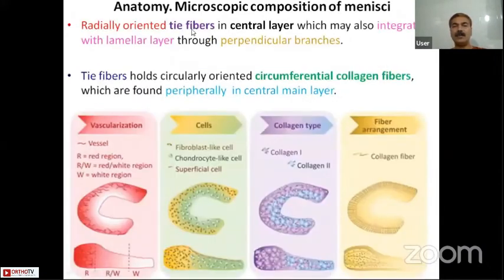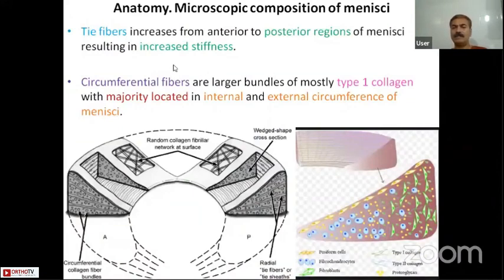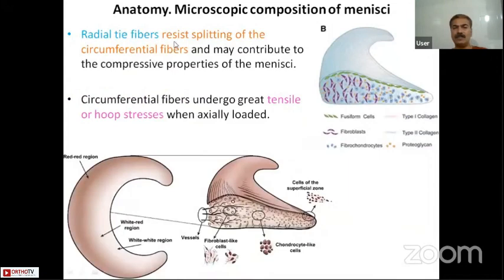In the central layer, the radially oriented fibers are known as the tie fibers, which can also integrate with the lamellar layer through perpendicular branches. The tie fibers hold the circularly oriented circumferential collagen fibers found in the periphery of the central layer. The tie fibers increase in number from anterior to posterior, increasing stiffness. The circumferential fibers are larger bundles and the radial tie fibers resist the splitting of circumferential fibers, contributing to the compressive properties of the menisci. The circumferential fibers undergo great tensile or hoop stresses when loaded axially.